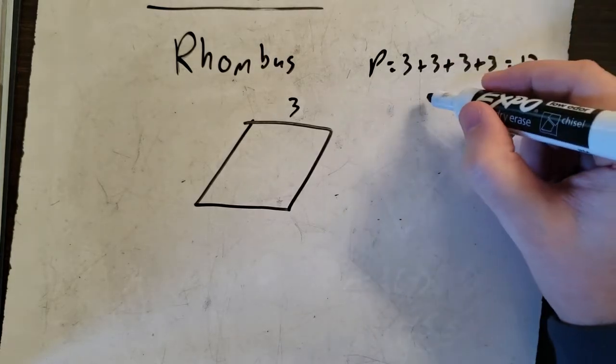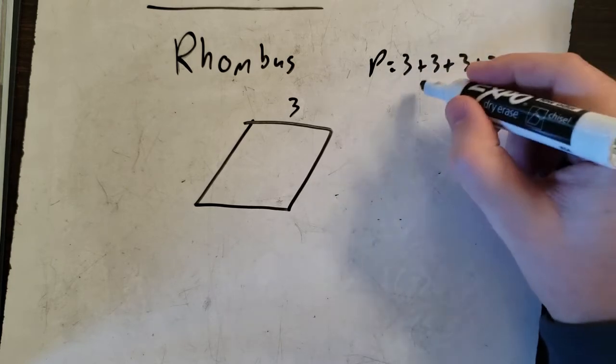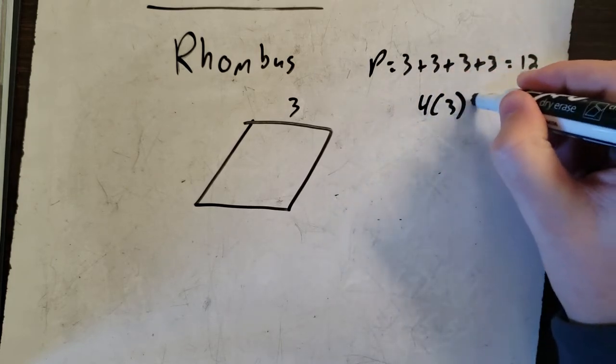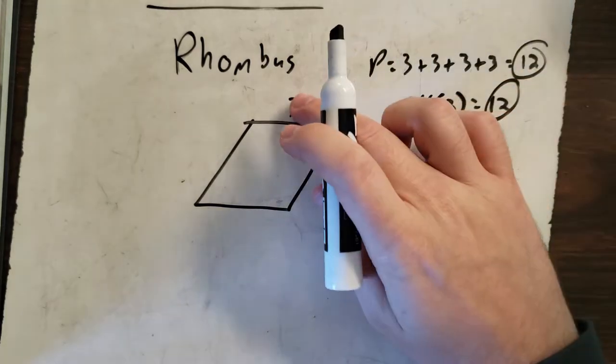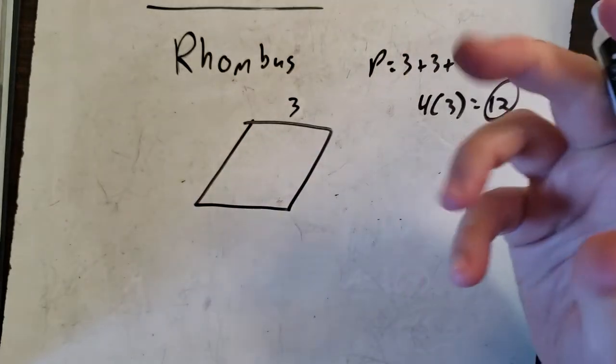Now you can also do it's four threes, right? So four times three. You can also do that to get twelve. Same thing. So twelve is your answer for the perimeter around the outside. It's all the same size.